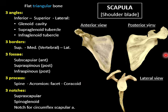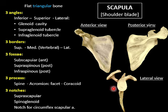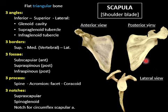The three notches are: first, the suprascapular notch on the upper border, transformed by the suprascapular ligament into a foramen. The suprascapular nerve passes through the foramen and the suprascapular artery passes above the ligament outside the foramen. Second, the spinoglenoid notch between the glenoid and the spine, through which the suprascapular nerve and artery pass from the supraspinous fossa to the infraspinous fossa. Third, a notch on the back of the lateral border for passage of the circumflex scapular artery to the infraspinous fossa.